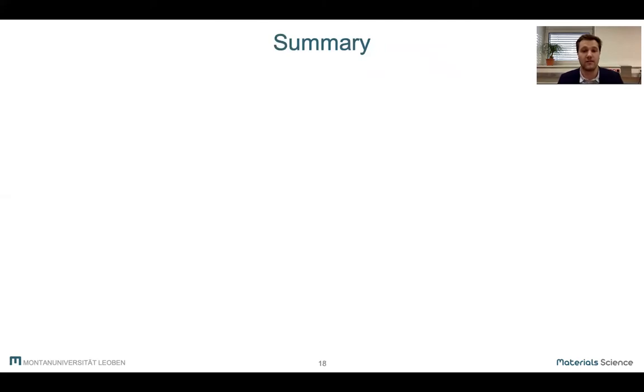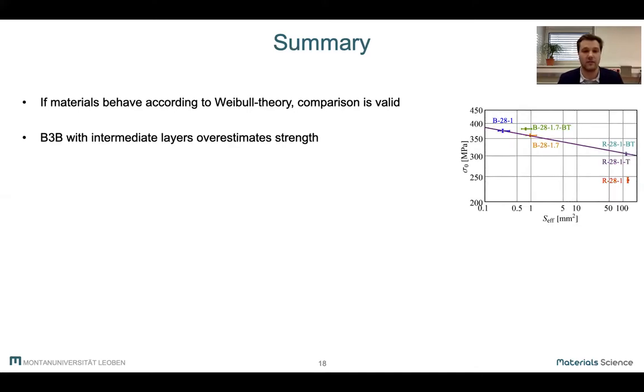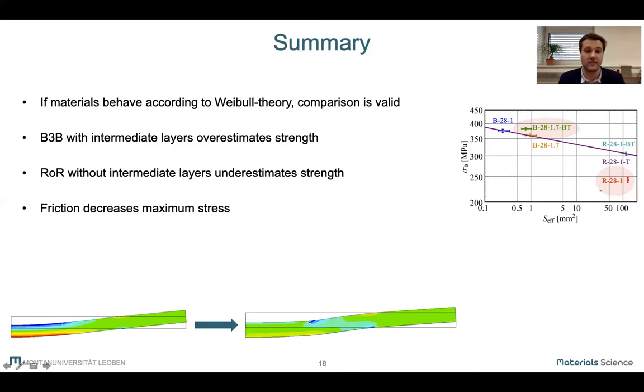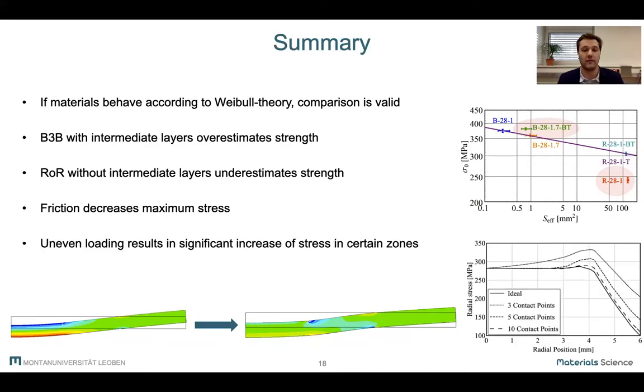So in summary, a comparison of the strength measured with either the ball-on-three-balls or the ring-on-ring test is valid, as long as the material behaves according to Weibull theory and some care is taken when choosing the appropriate layers. This was seen when layers were used in the ball-on-three-balls test and were not taken into account properly with the factor F, or when no layers were used for the ring-on-ring test and quite low strengths were measured. Contrary to the initial assumption, friction could not explain the lower strength of this dataset, but uneven loading could explain the occurrence of zones of increased stress.